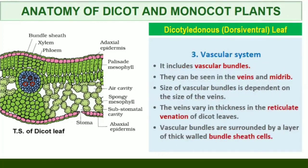The vascular system includes vascular bundles, which can be seen in the veins and the midrib. The size of the vascular bundles is dependent on the size of the veins. The veins vary in thickness in the reticulate venation of dicot leaves. The vascular bundles are surrounded by a layer of thick-walled bundle sheath cells.